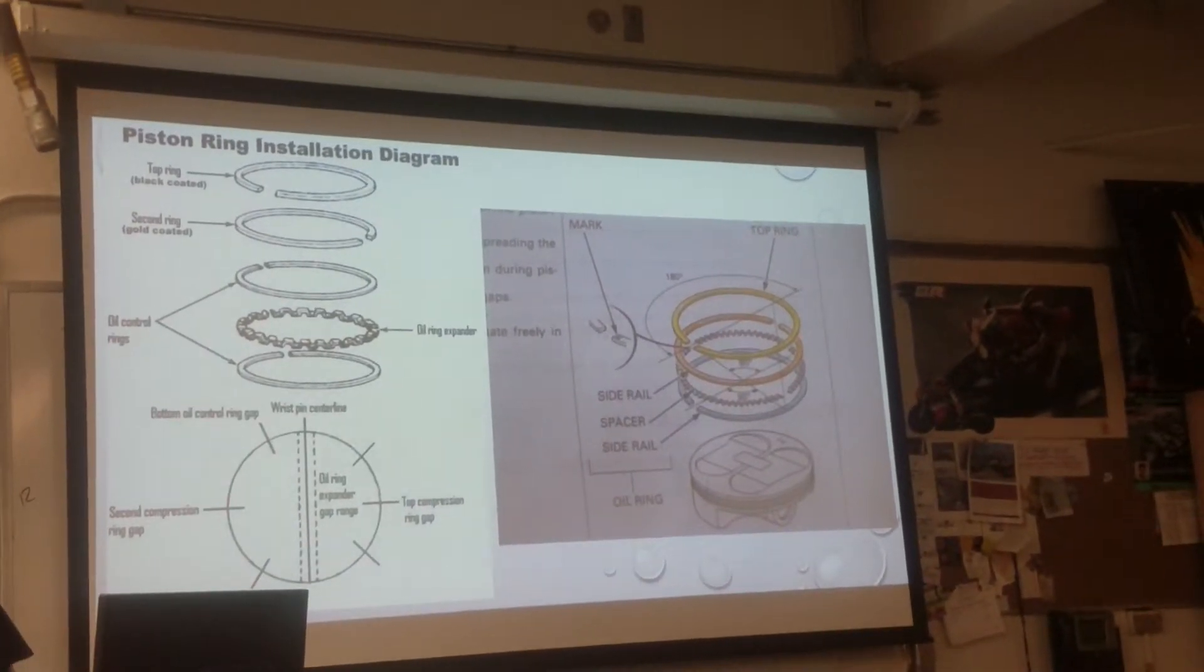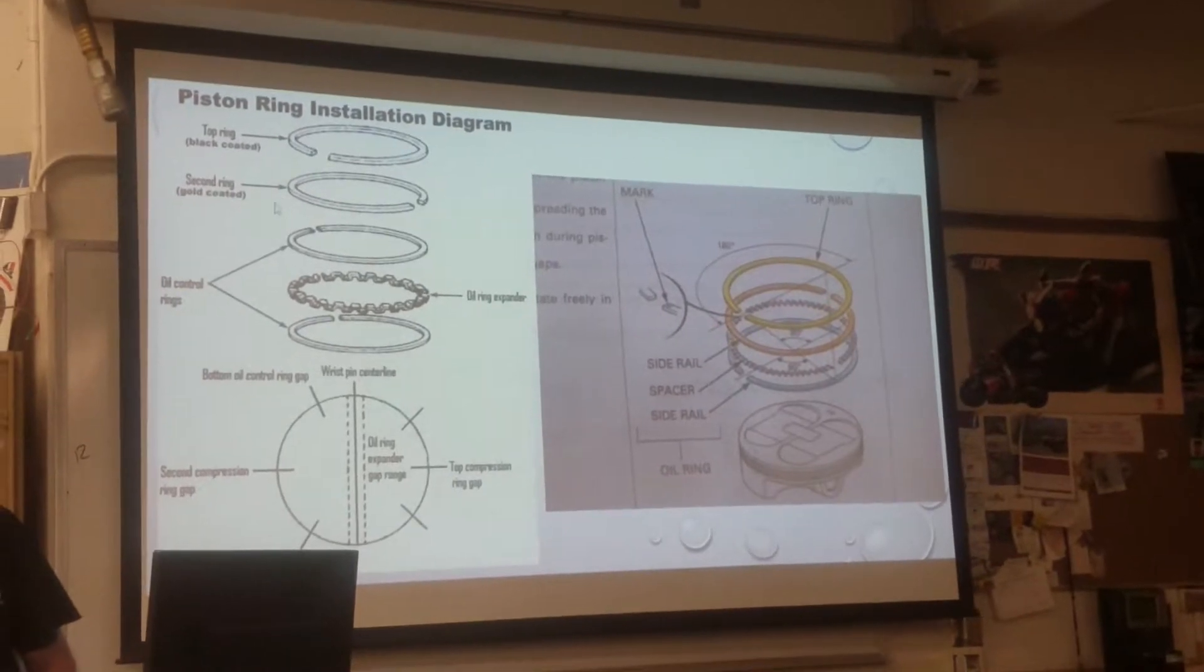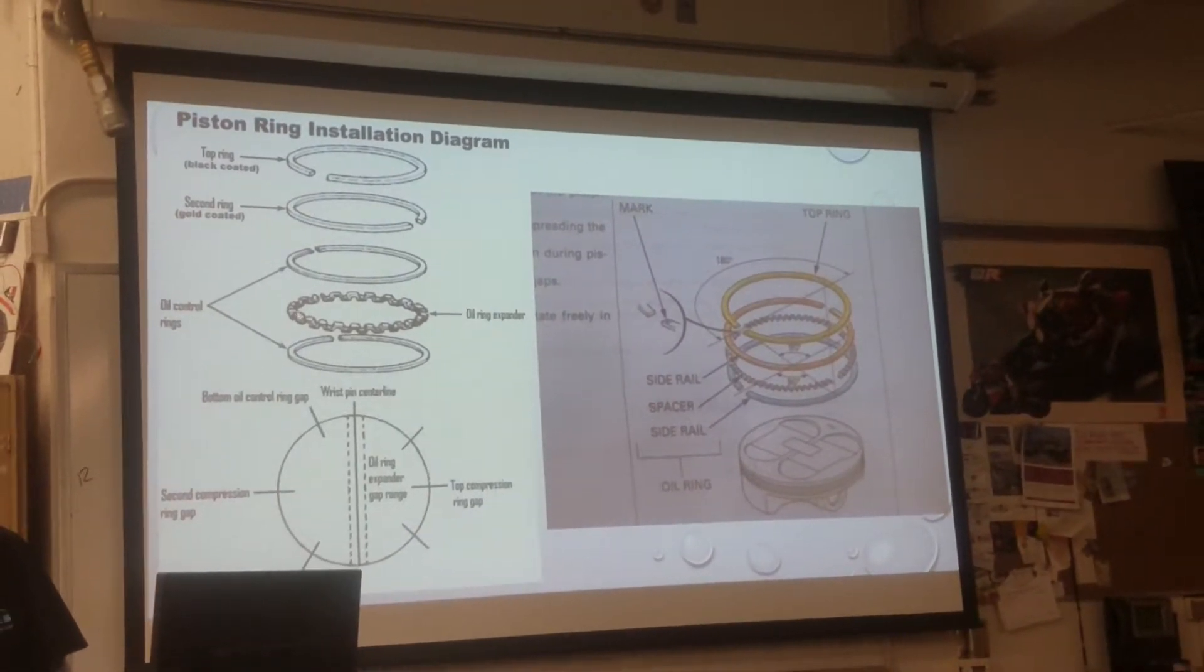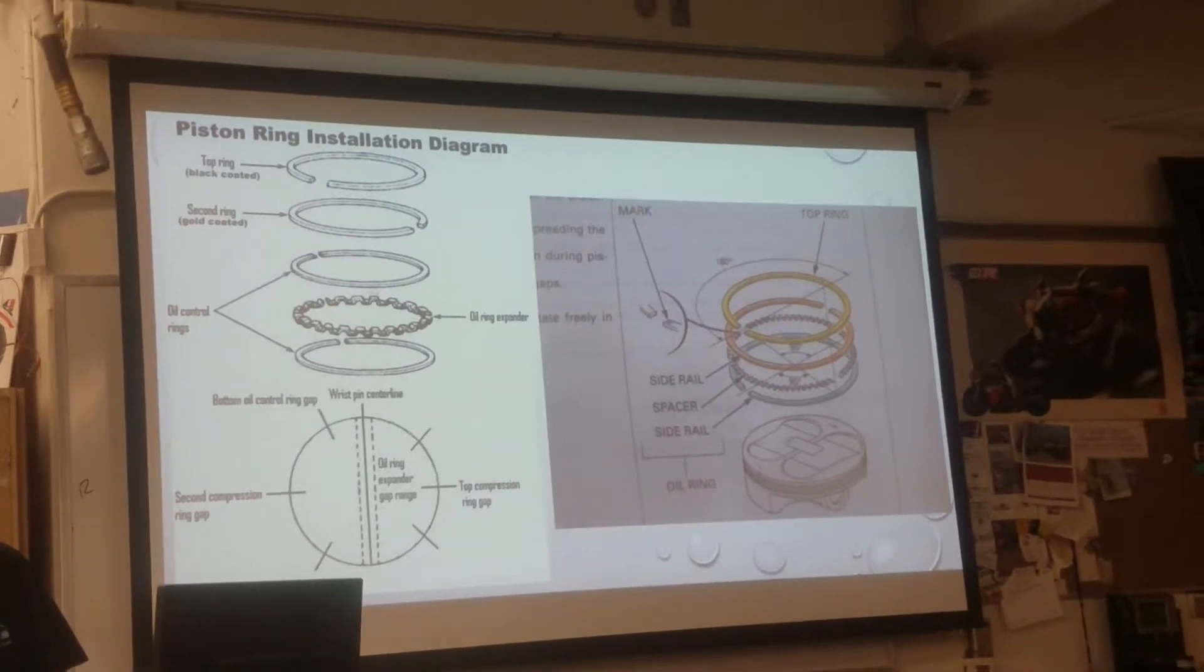Top one, what's called, compression ring, right? Second one, what do you call it? Scraper. Scraper. And then these three pieces? Oil ring.